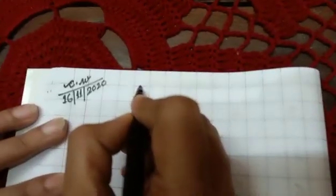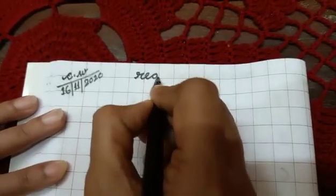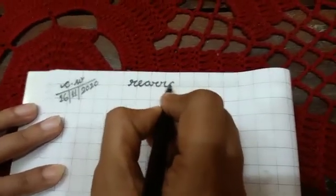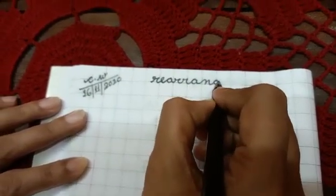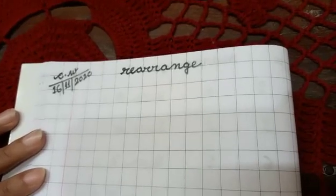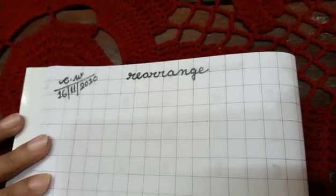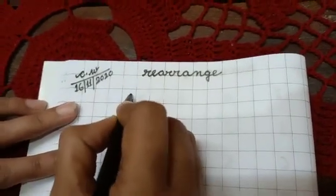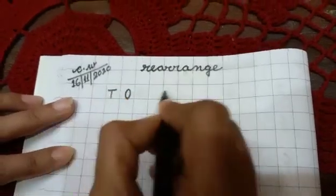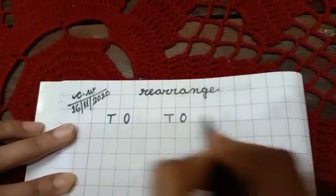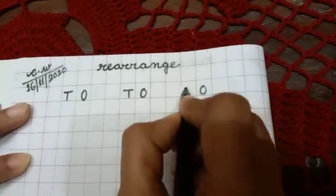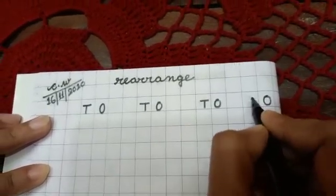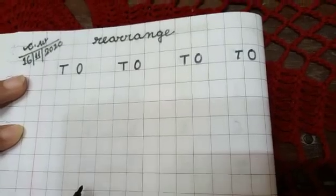rearrange. R E re A double R A N G E. Rearrange. Written. Okay. Then here you will write 1s, 10s, 1s, 10s, 1s, 10s. Written.